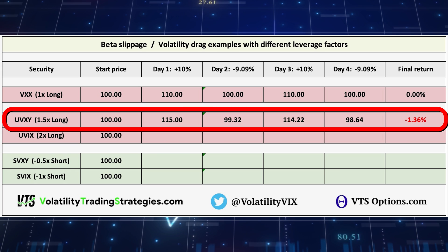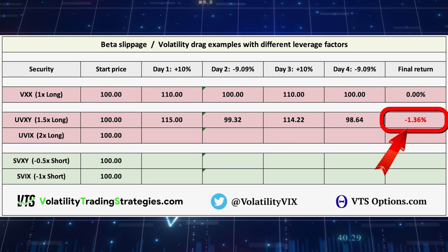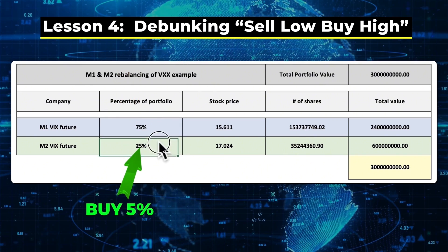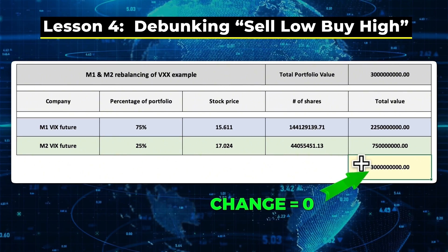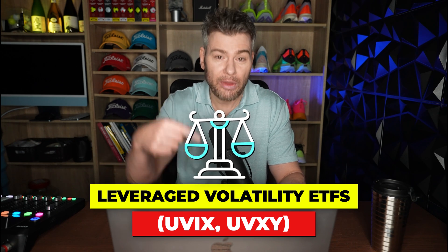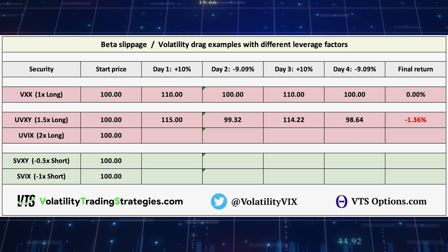Now let's do the exact same daily price changes for the 1.5 times leveraged UVXY. You can see there will be some beta slippage — after that four-day round trip, it's actually lost a little bit of value. All of the volatility ETPs, regardless of leverage, do a little rebalancing to transfer M1 VXX futures towards M2 VXX futures, and that rebalancing is done at a net zero transaction with no price change. But for the leveraged products, they also have to rebalance for the leverage factor so they can start the next day at the intended market exposure that matches their leverage factor — that's the gearing effect, and there's a tracking error involved.